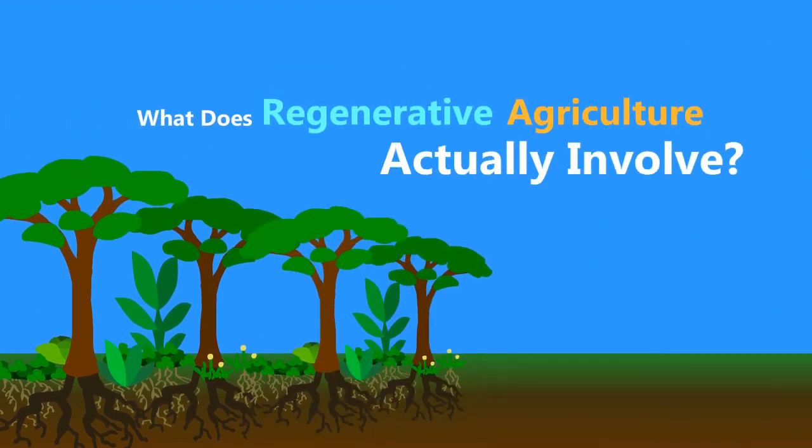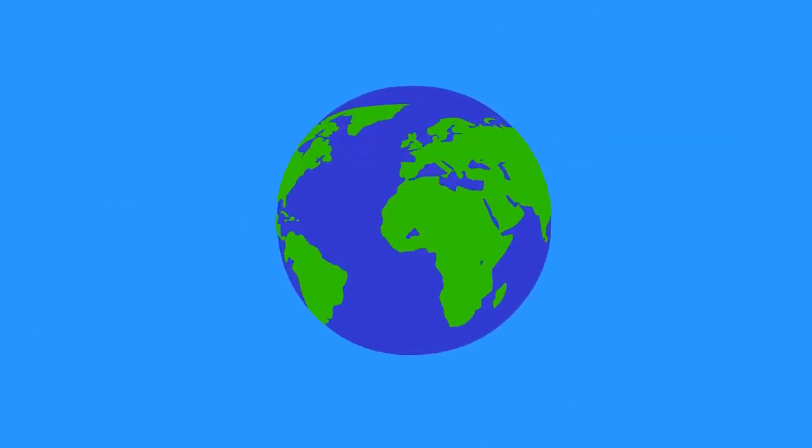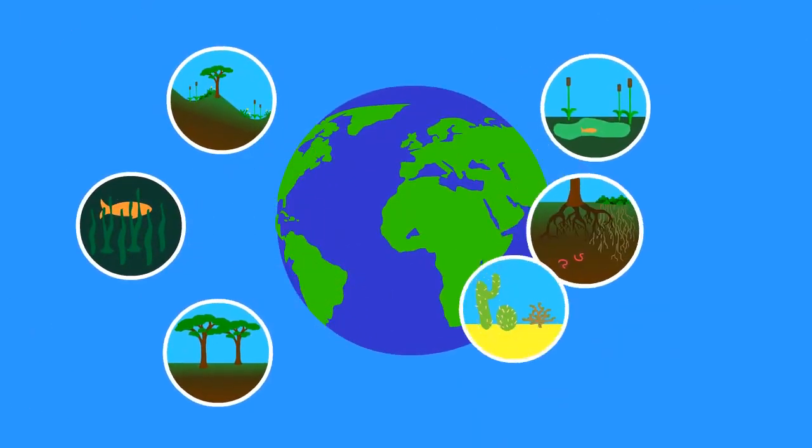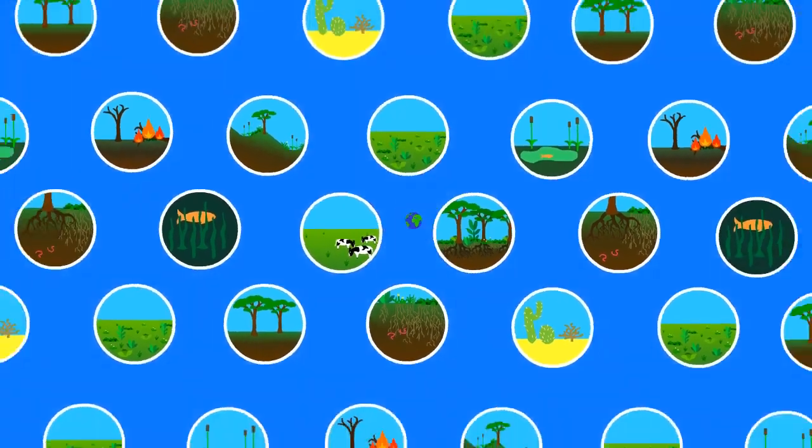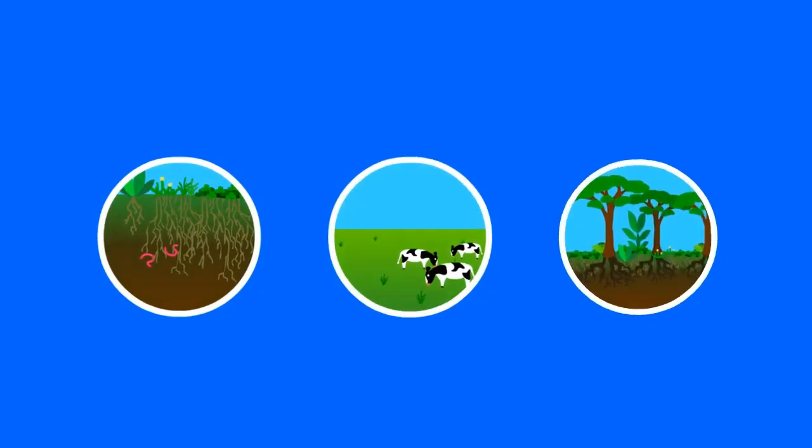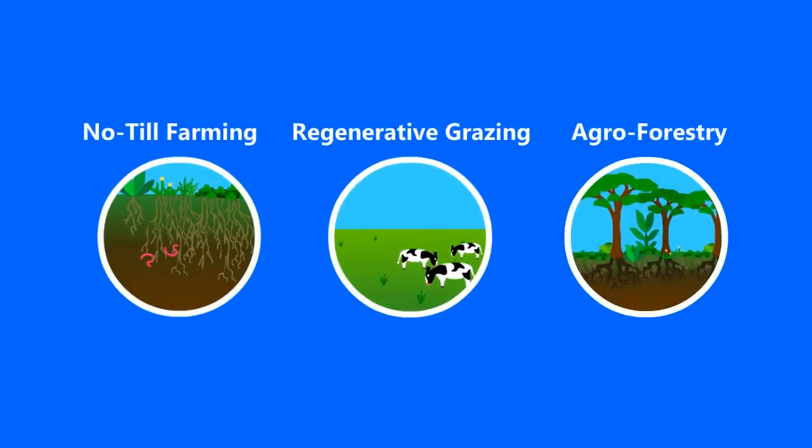So what does regenerative agriculture actually involve? Answering this question is actually pretty tricky because the practices that work best largely depend on the land that's being worked with. So the variety of different practices border on infinity, a bit more than this video can cover. However, let's look at three common forms that regenerative agriculture can take.